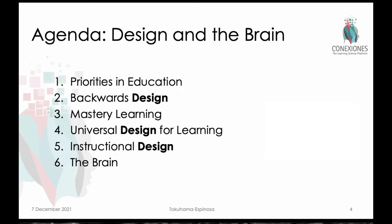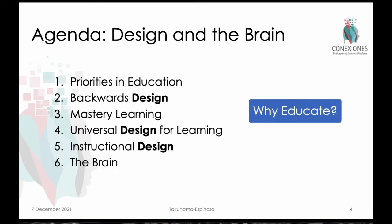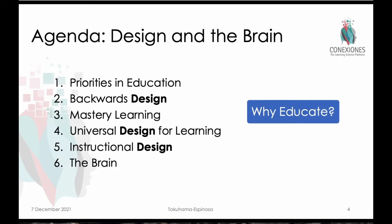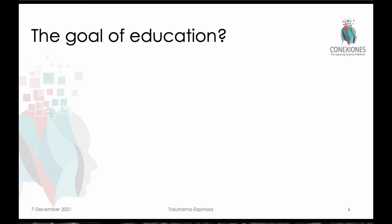Today we're going to look at some different priorities in education — why educate — and consider the use of three different types of design: backwards design, universal design, and instructional design, as we consider overall objectives of mastery learning and what we know about the brain and learning. We're going to put all those pieces together into several different ideas or ways to personalize learning while simultaneously saving time through the use of technology.